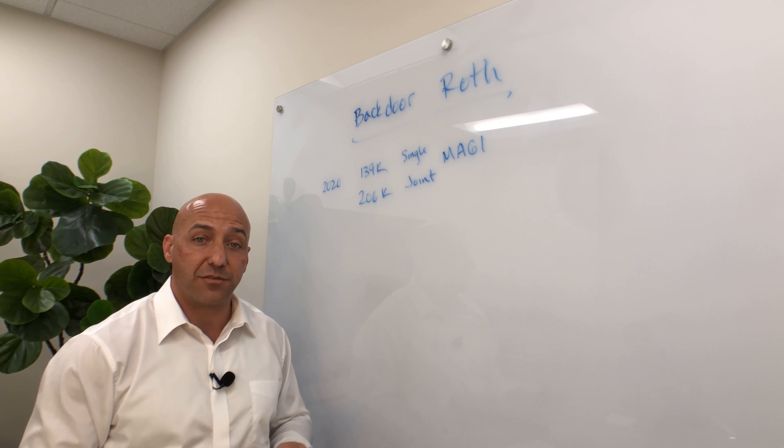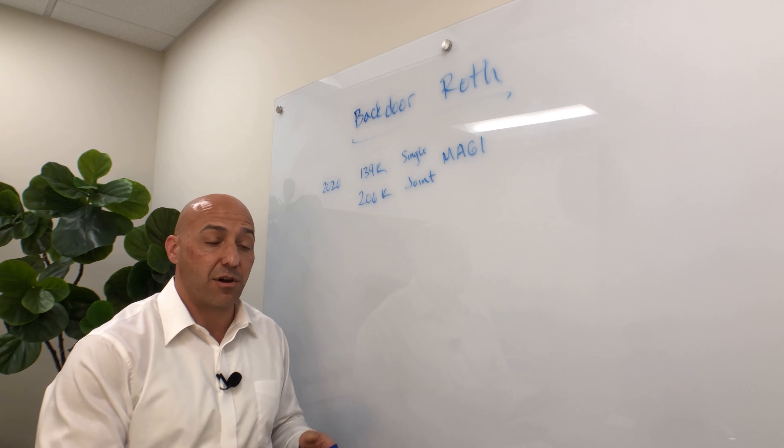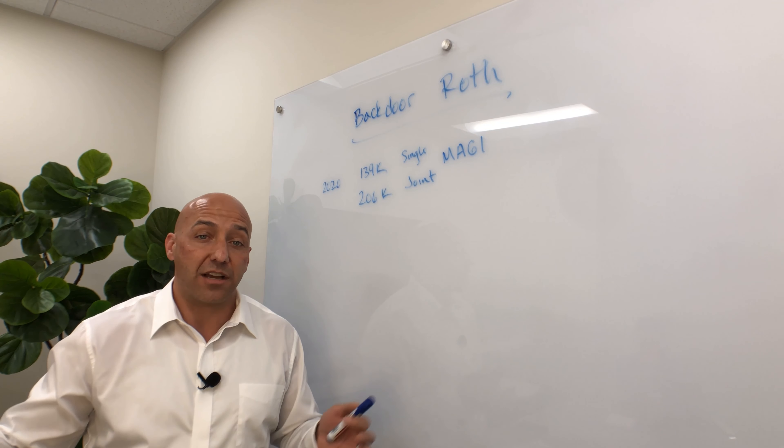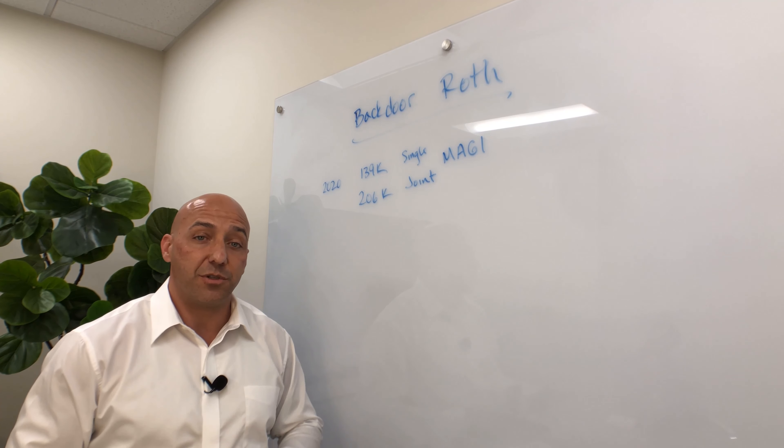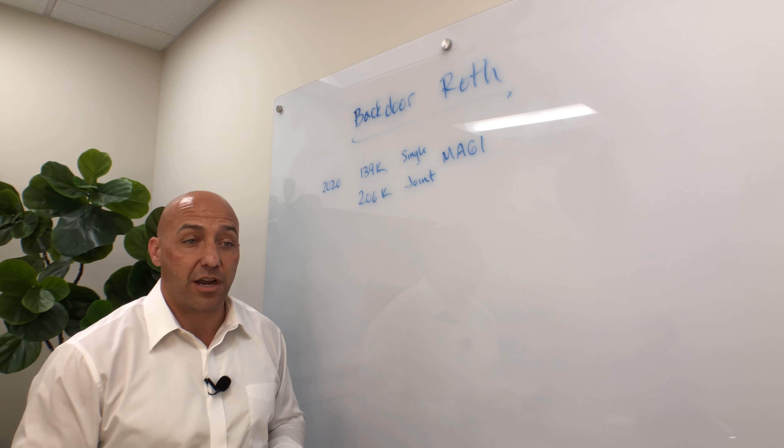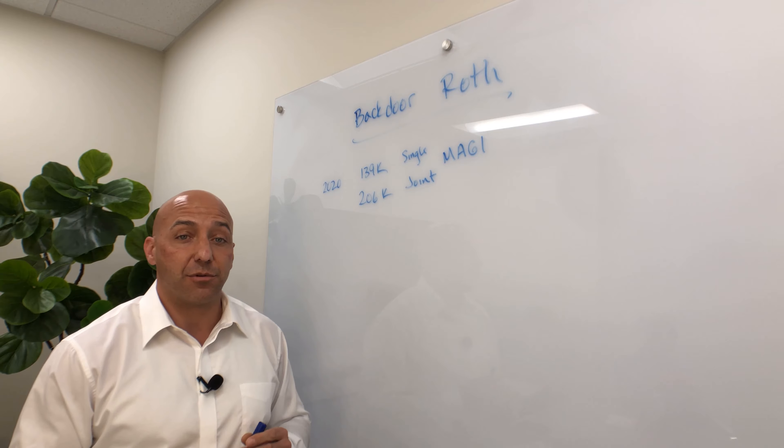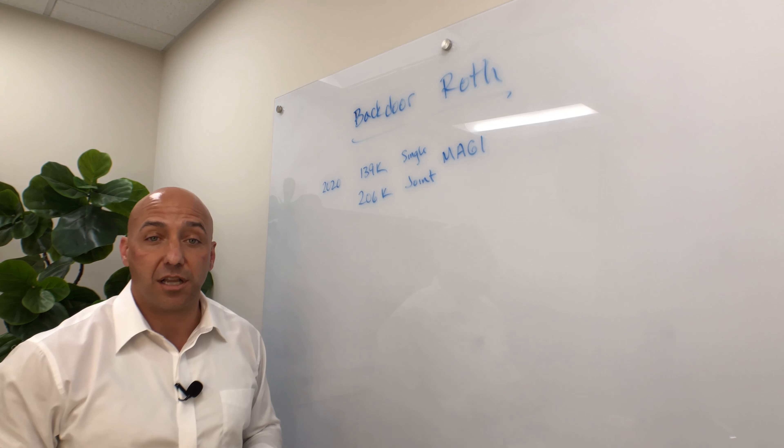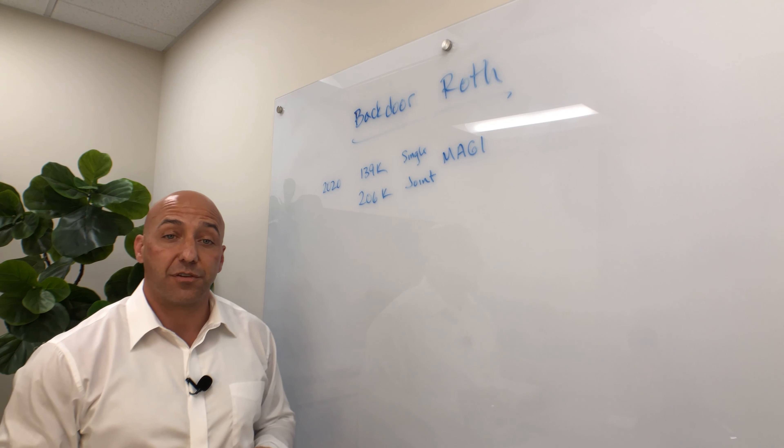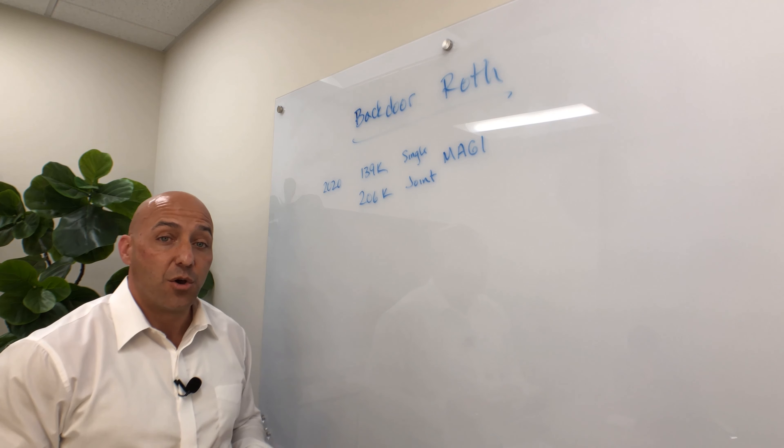And a Roth IRA is a great investment vehicle because your money goes into the Roth, it grows tax-deferred, and then all the money, the earnings, all of your contributions come out tax-free during retirement. So I'm a big fan of the Roth IRA, and I would love to see more clients use it, but my high-income earning clients don't qualify for a Roth IRA frequently. So what do we do?